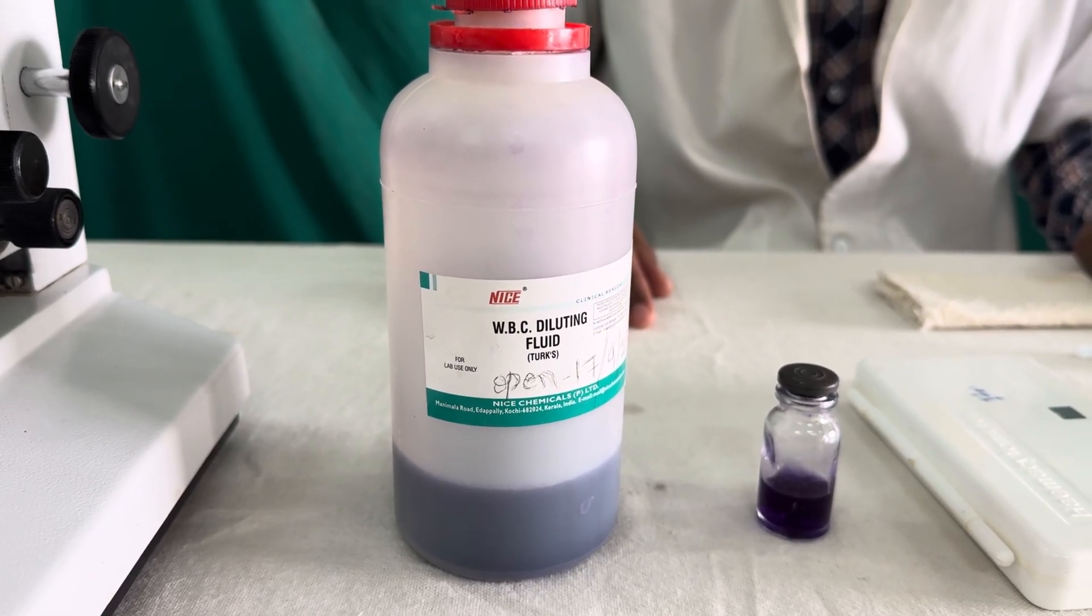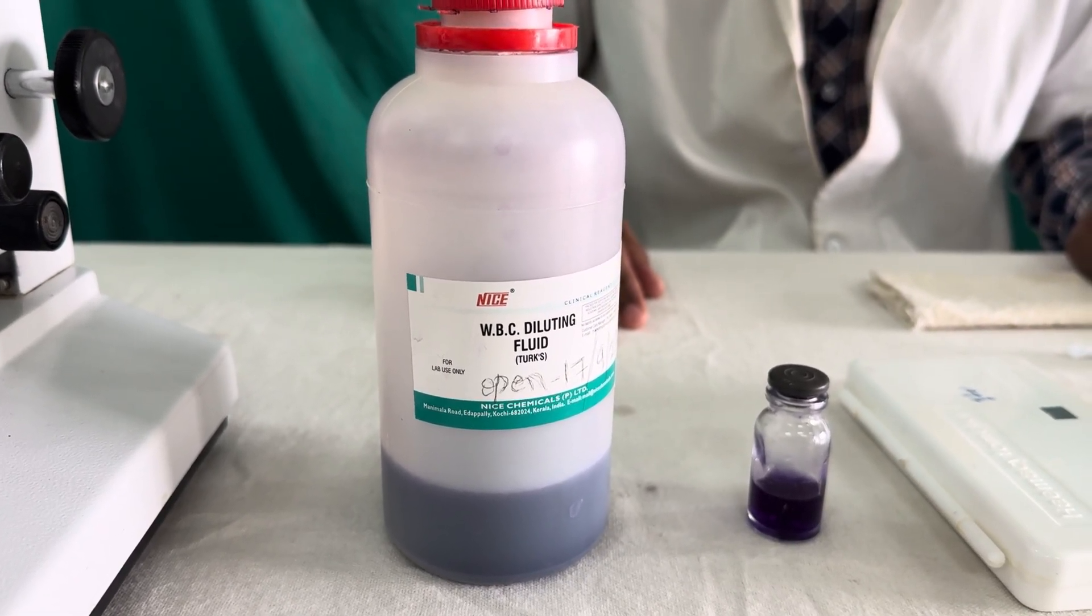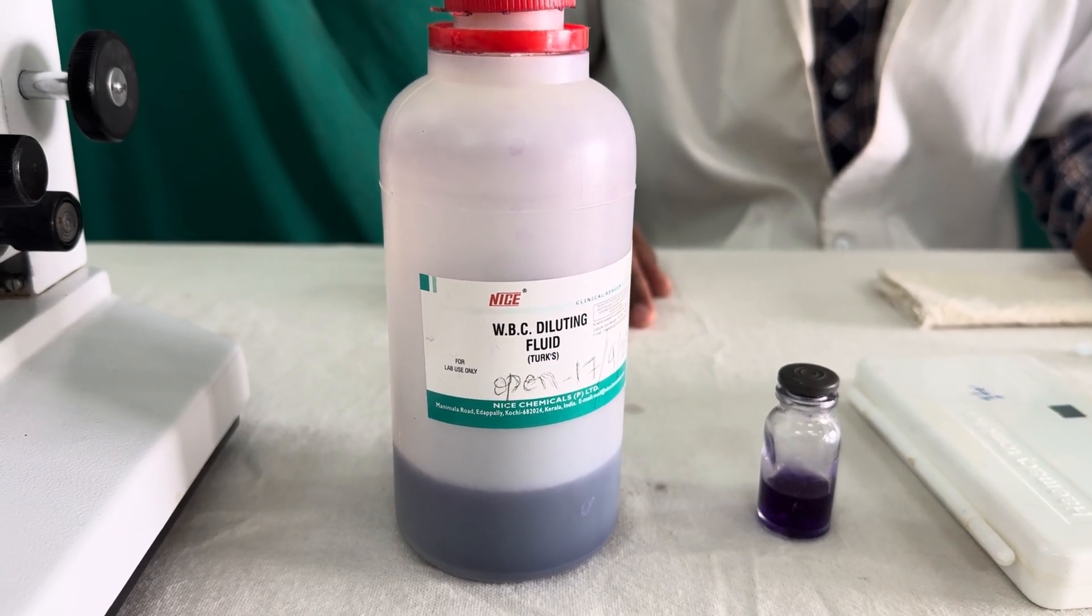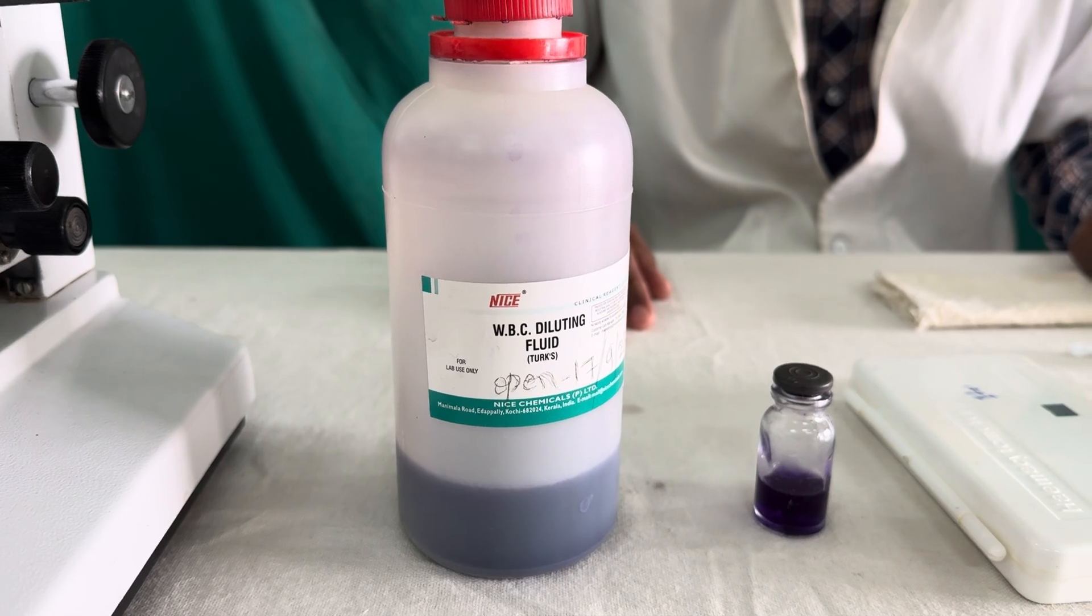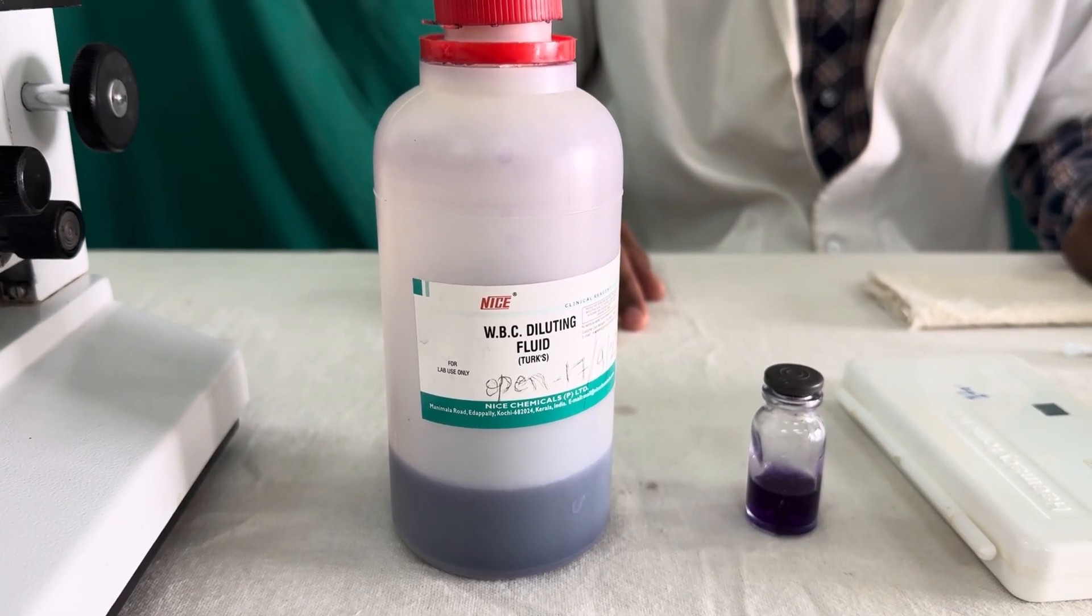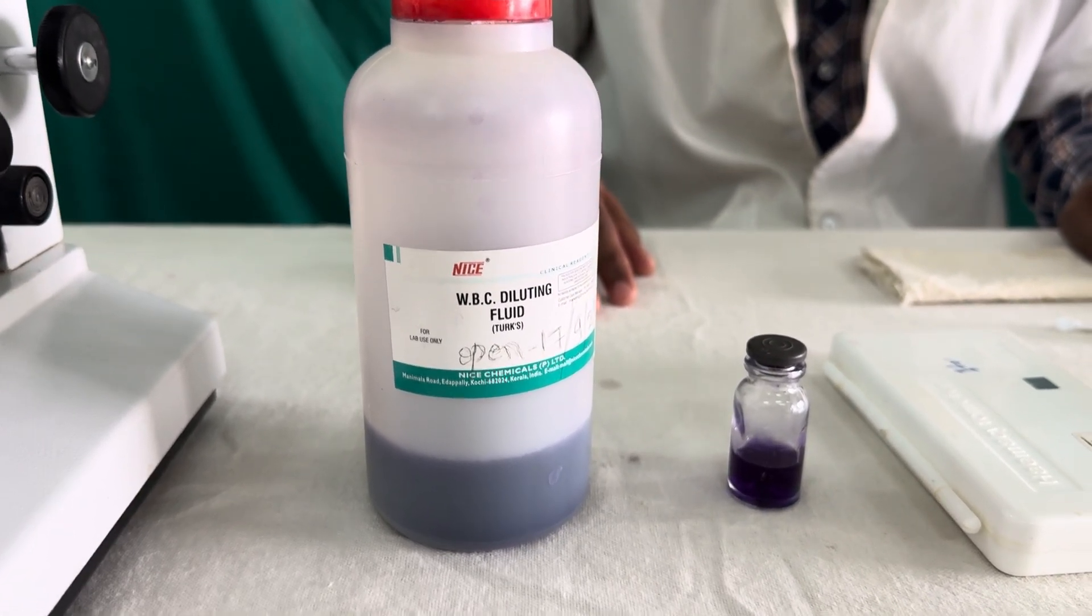The composition of the WBC diluting fluid is 1% glacial acetic acid and 0.3% gentian violet. This glacial acetic acid will help in the destruction of the RBCs mainly. And this gentian violet will stain the nucleus of the WBCs.